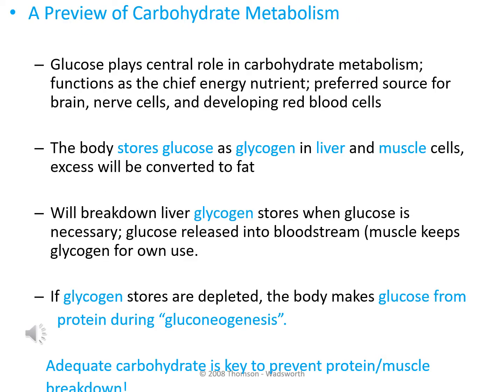We're going to take a very brief glimpse at carbohydrate metabolism — what happens to carbohydrates, specifically glucose, after digestion and after absorption. Glucose is the preferential energy source for certain areas of our body, so it does have the function as the chief energy nutrient. Glycogen is the storage form of glucose in both animals as well as humans, and it's stored in our liver and in our muscle cells. If there is excess glucose which is not made into glycogen and stored, that excess glucose is going to be converted into fats. Our body has the capability of being able to break down our glycogen stores when we need a source of glucose — it breaks down the glycogen molecule into the individual glucose units, and the glucose is then released into your bloodstream.